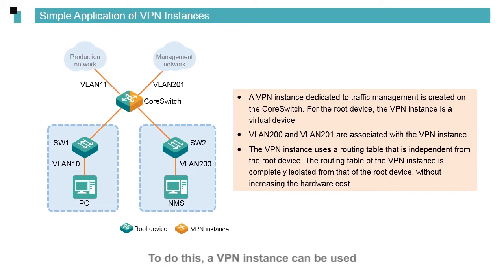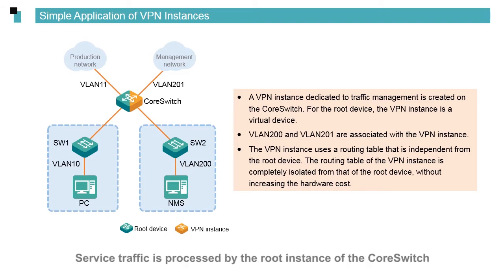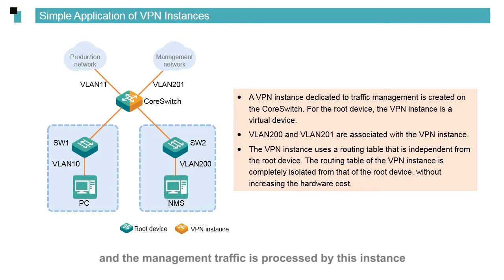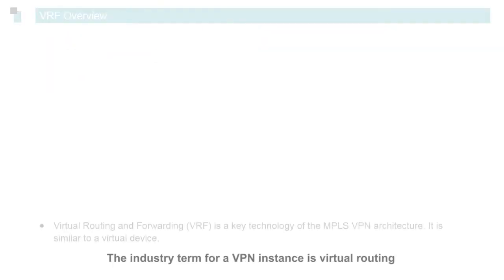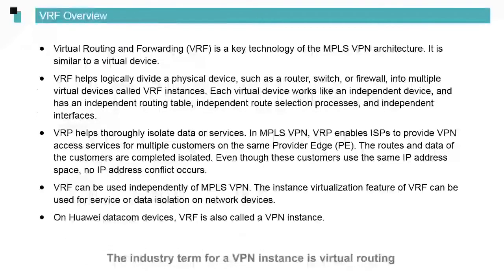To improve scalability without increasing hardware costs, a VPN instance can be used. A VPN instance is equivalent to a virtual device. Service traffic is processed by the root instance of the core switch. In addition, a VPN instance is created on the core switch, and the management traffic is processed by this instance. In this way, the traffic of the two networks is isolated. The VPN instance uses an independent routing table. The industry term for VPN instance is Virtual Routing and Forwarding, or VRF.